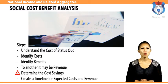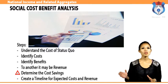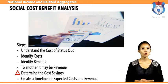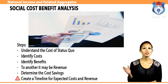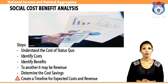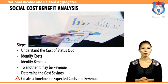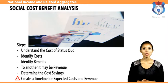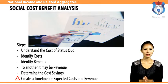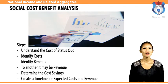Fourth, determine the cost savings — what can we stop doing if we make this investment? For example, if we do X, can we stop using Y? That cost saving could exponentially increase the benefits of the initiative. Fifth, create a timeline for expected costs and revenue — map out when costs and benefits will occur and how much they will be. This is critical for setting expectations and aligning all interested parties.